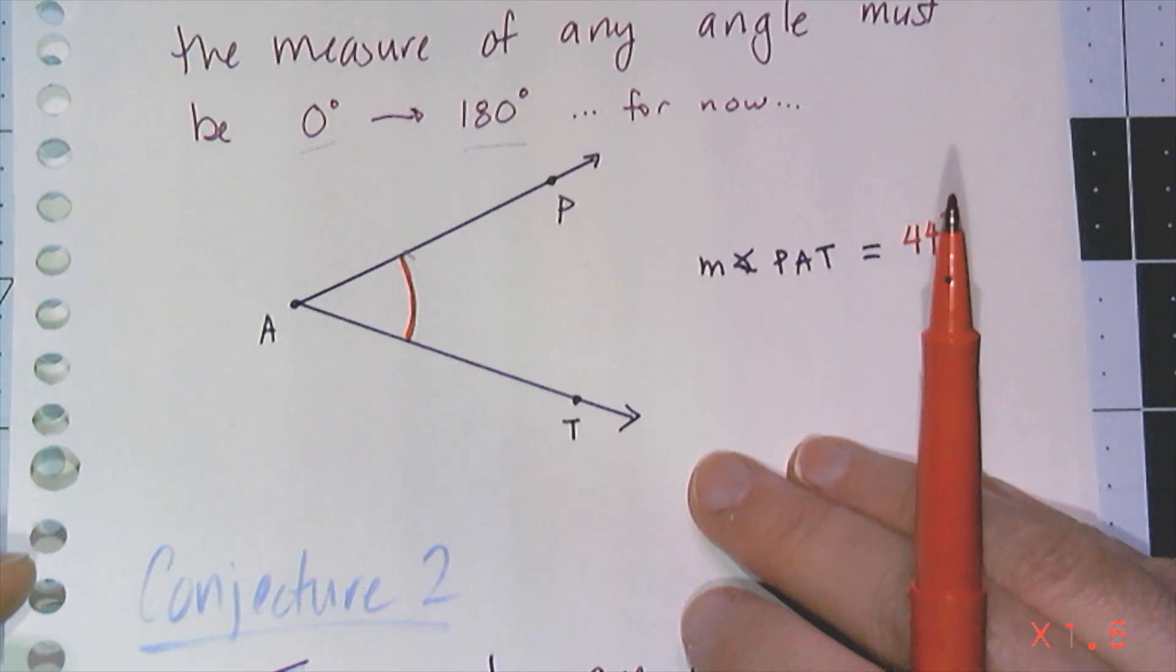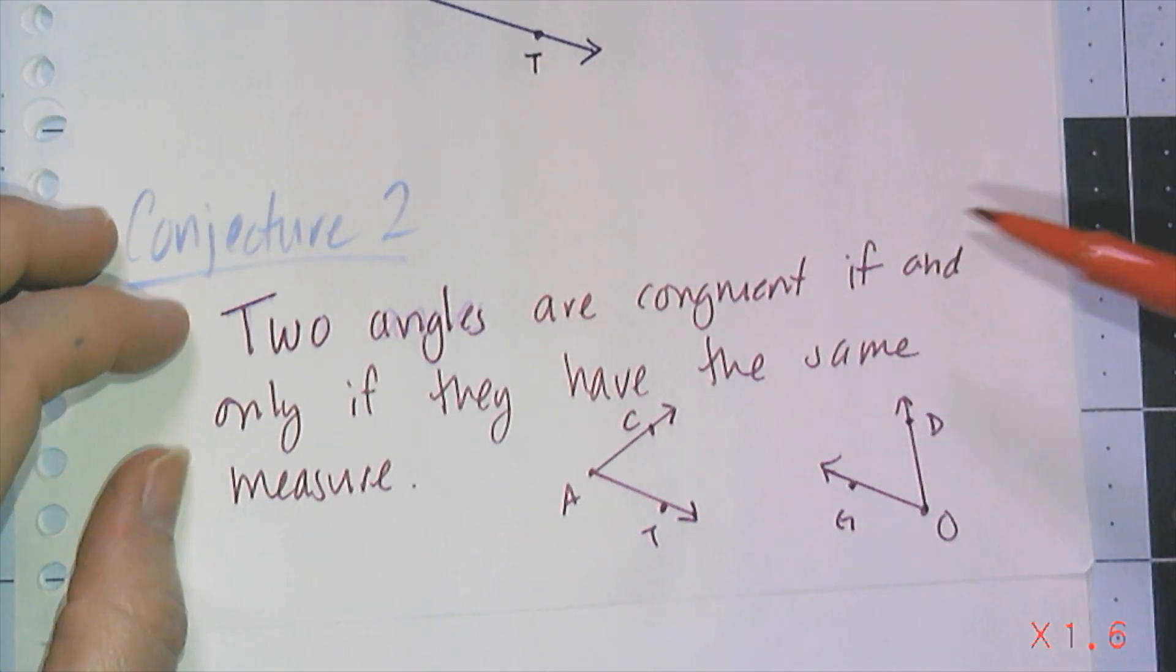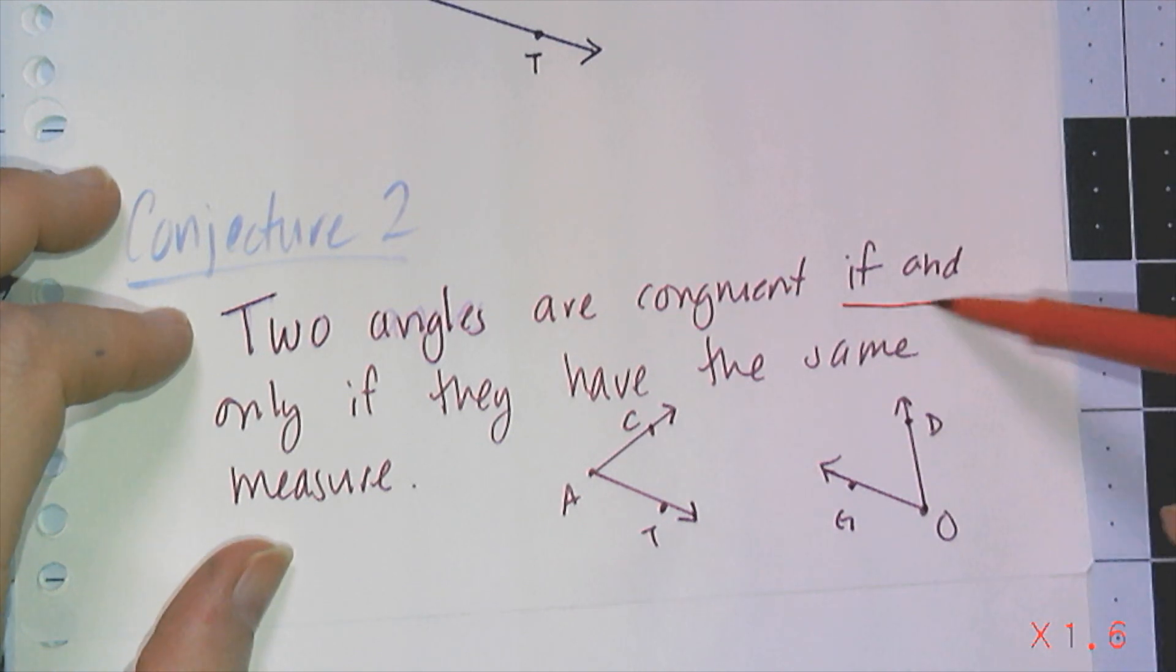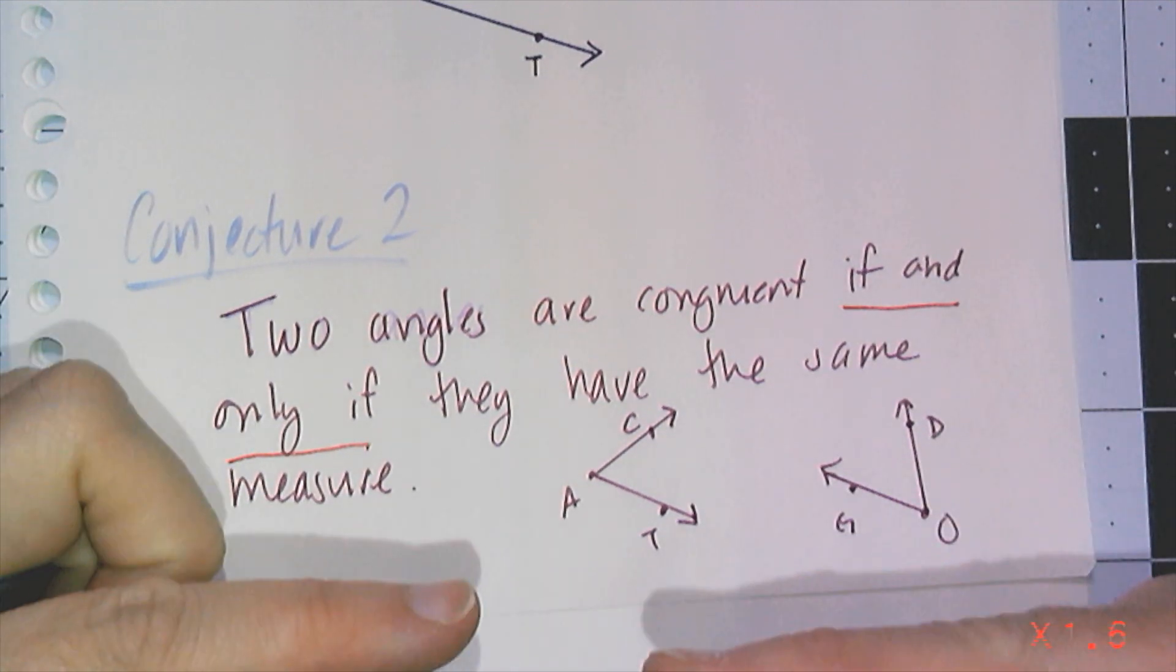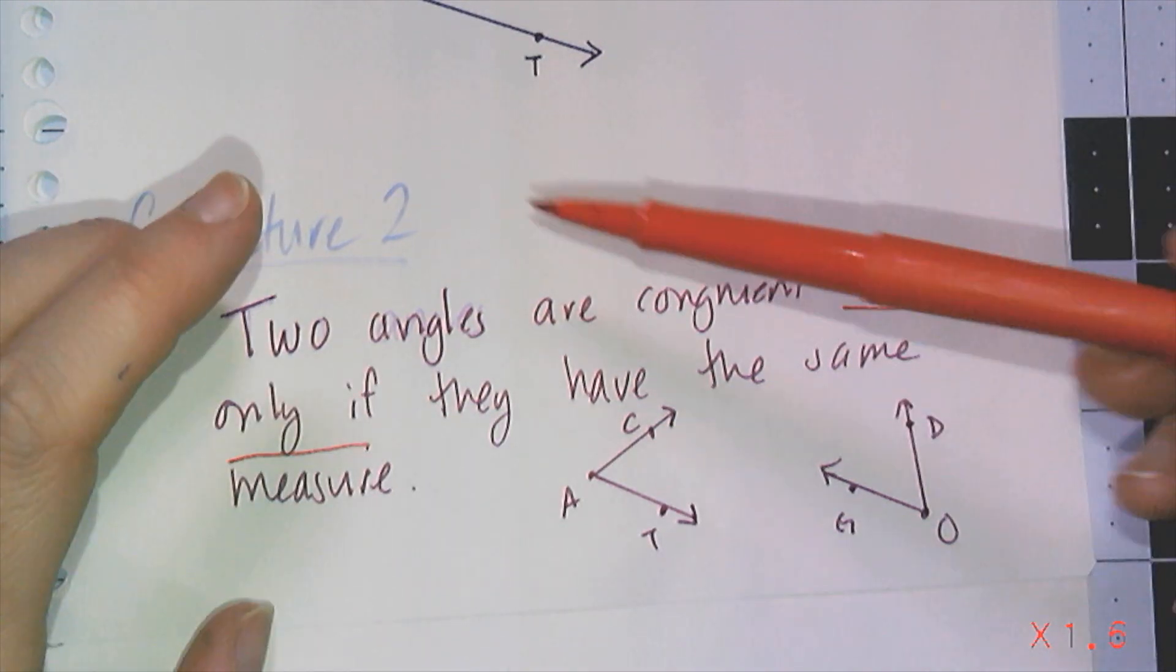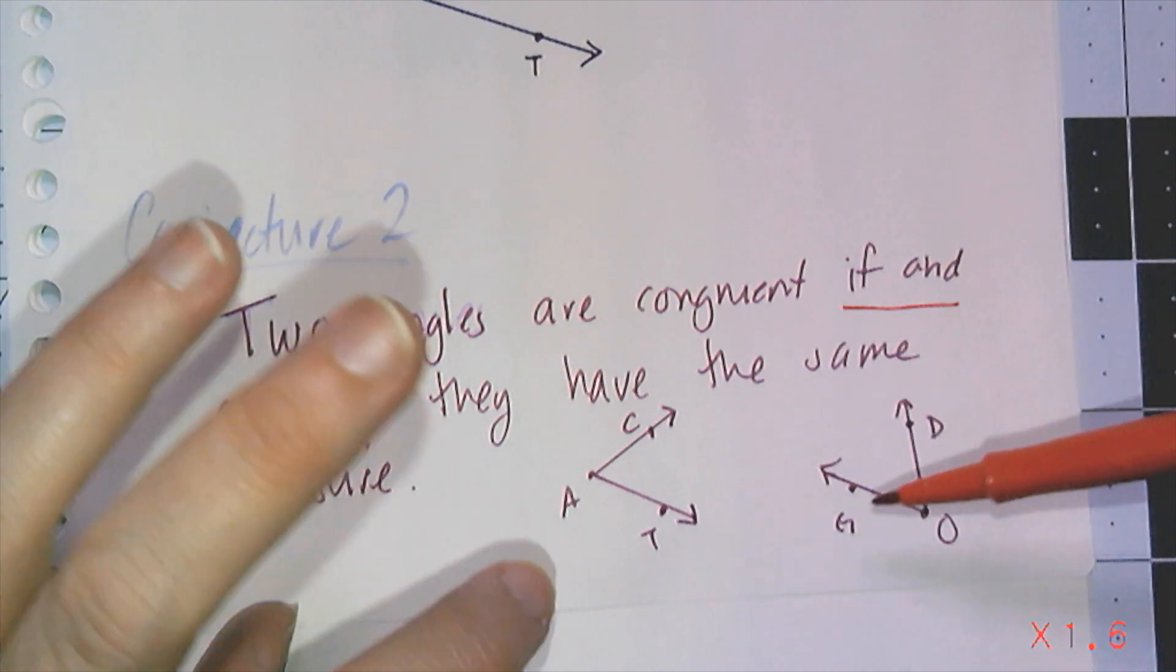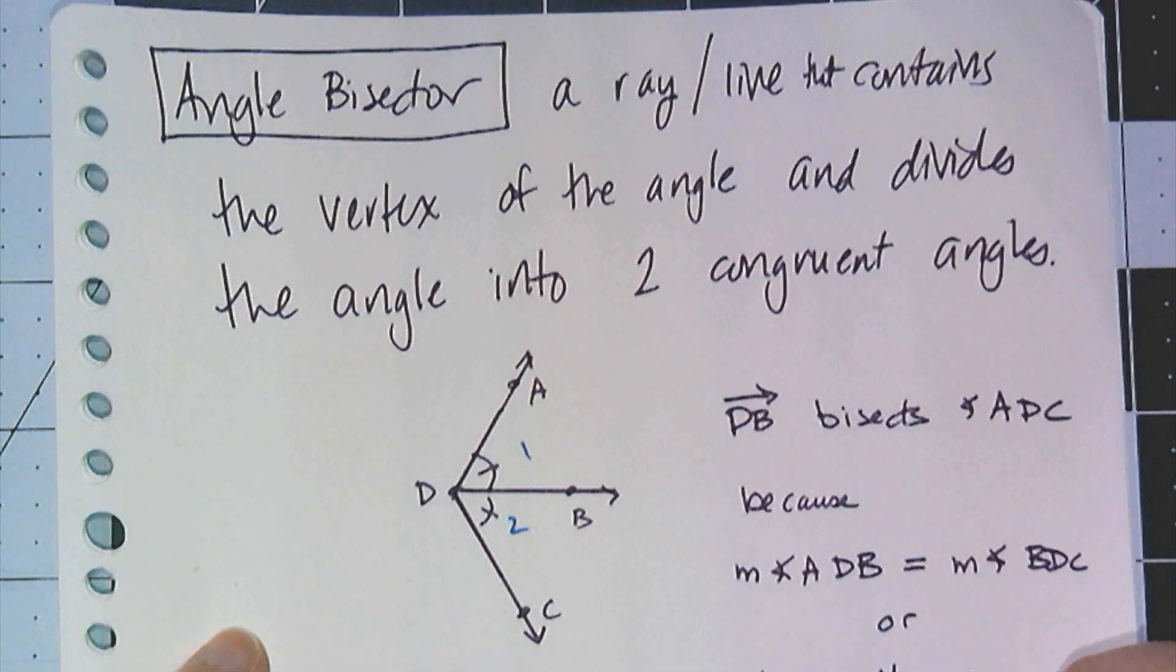Being able to measure an angle takes us to our second conjecture of geometry. And it says that two angles are congruent if and only if they have the same measure. And remember, if and only if is the conditional statement that works both directions, where you can swap the premise and the conclusion and they're both true. So two angles are congruent if they have the same measure, or if two angles have the same measure, they are congruent.